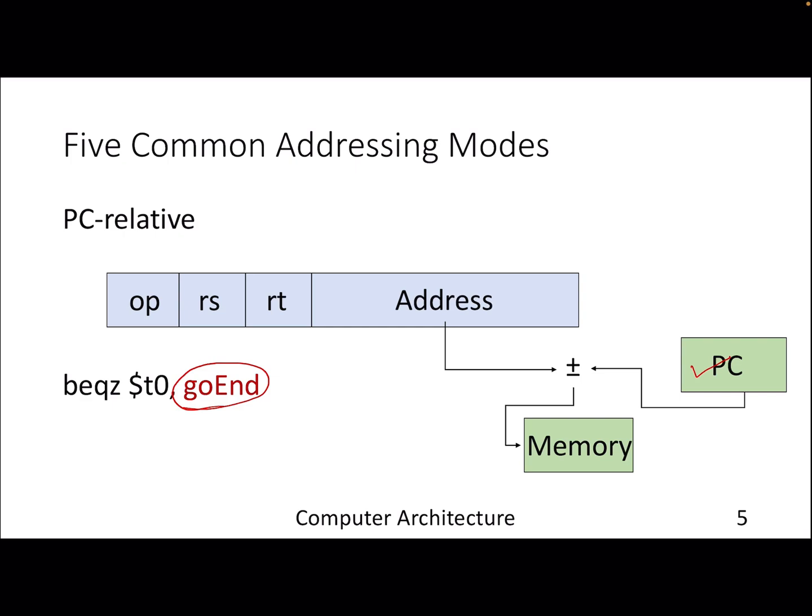The address is the label provided in the instruction plus the content of the current program counter. Based on that, it will go to memory to get the operand. In this case, the operand is actually the next instruction that you want to fetch from memory. This is typically used in branch instructions where you need to jump to a different part of the code.